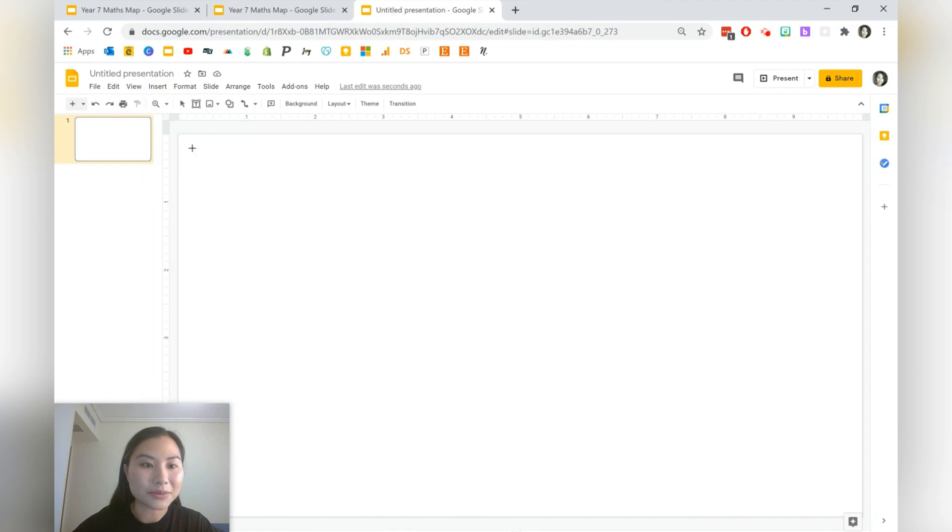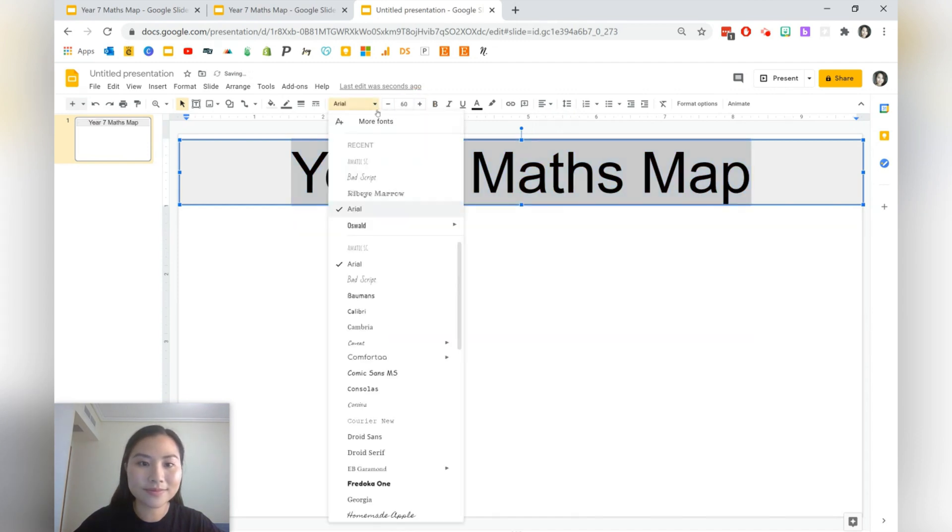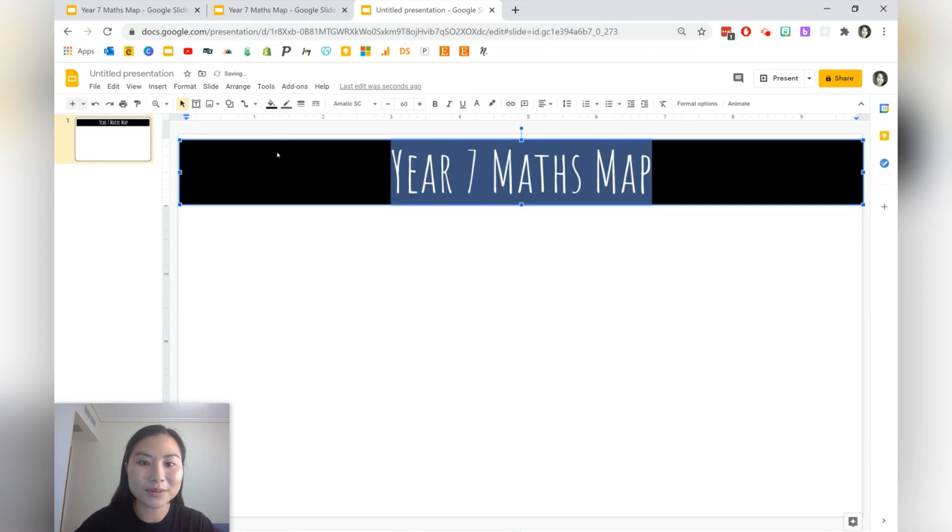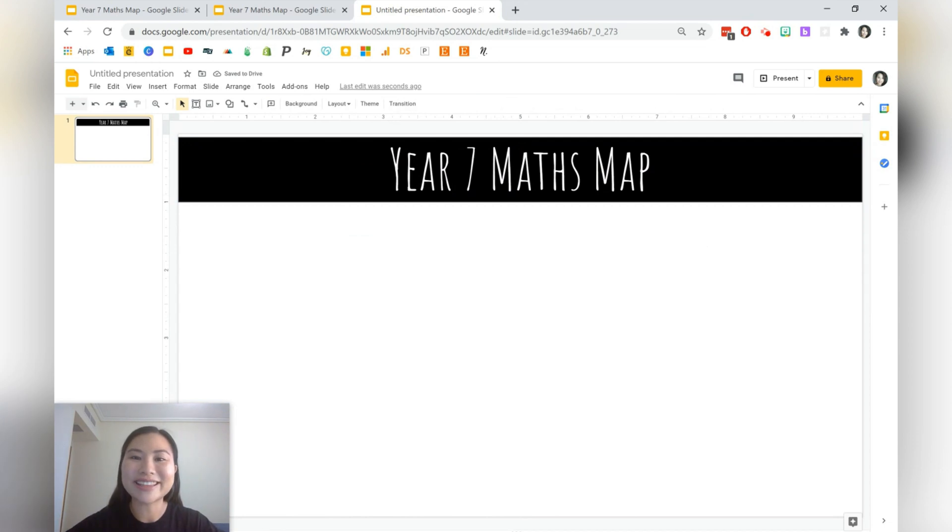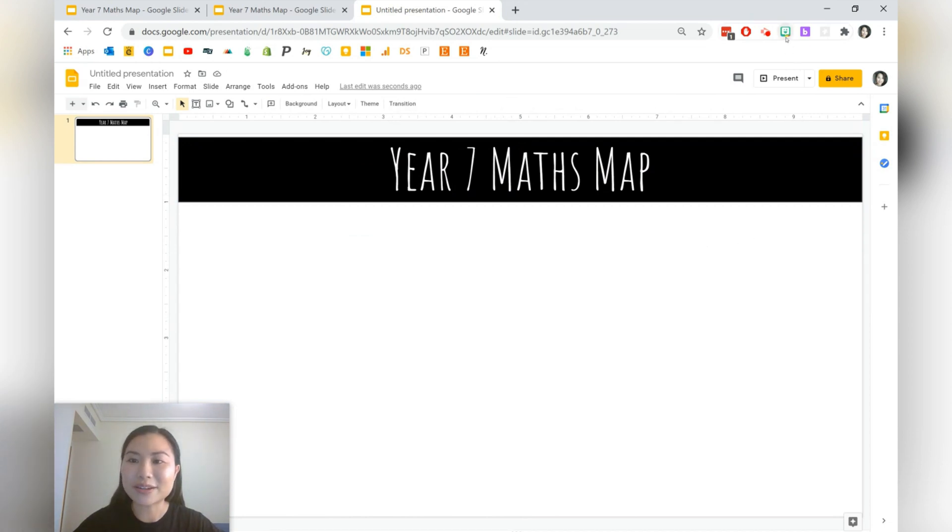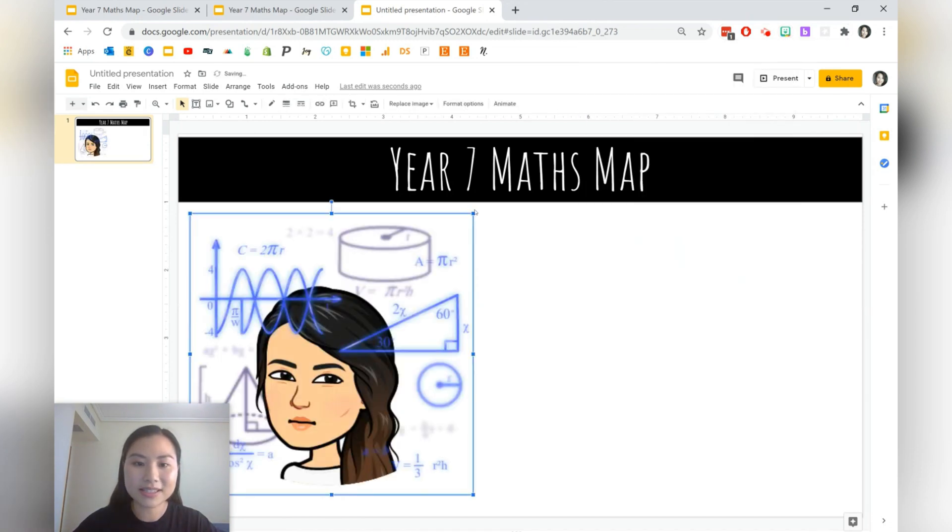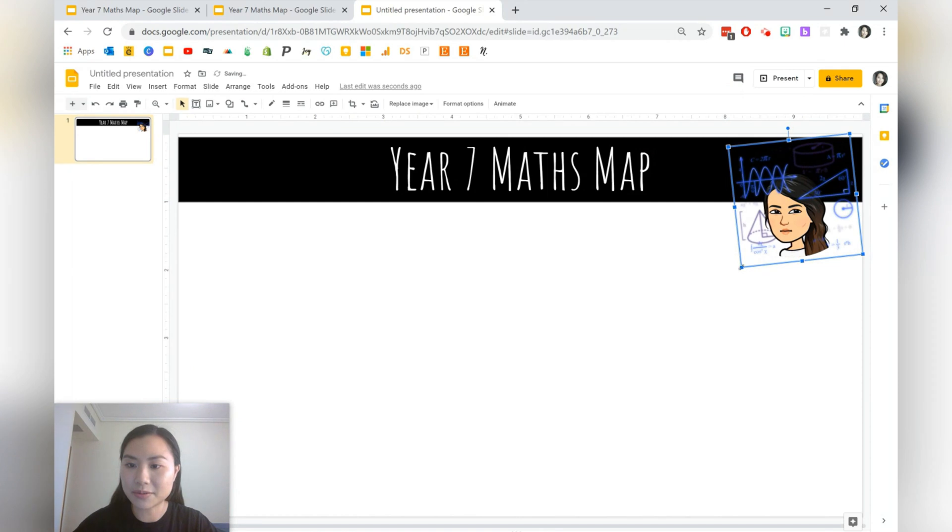So I'll just grab a shape here and I'm just going to write Year 7 Maths map and I'm just going to play around with the font a little. I'd like to also change the fill color and just position it where I want. Okay I also like to add my Bitmoji. I think it does add a friendly and personal touch. So here I've got the Bitmoji Chrome extension and I'm just going to add some maths related Bitmoji images.